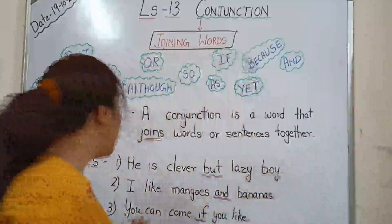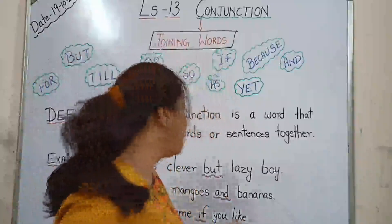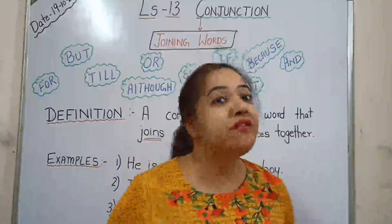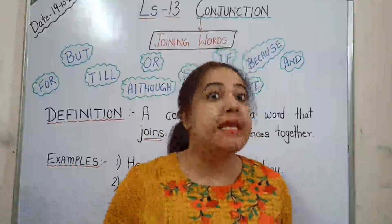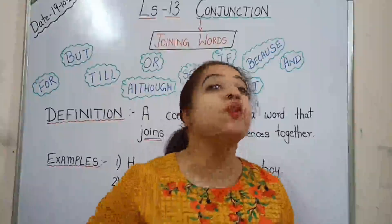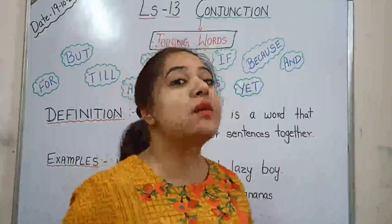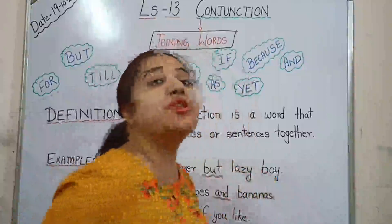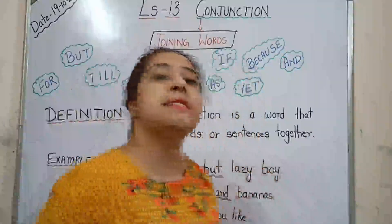Now the third example: You can come if you like. Here we have used 'if'. Where is 'if' used? 'If' is used where a condition is taking place. You can come to the place if you like — there is a condition. So we have used the conjunction 'if' to shorten the sentence.